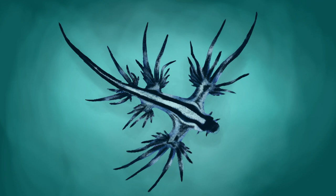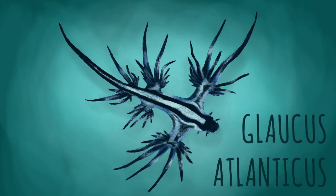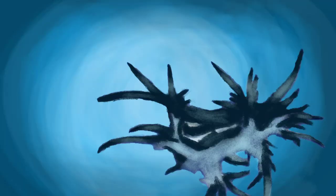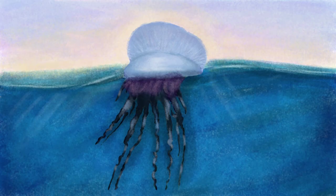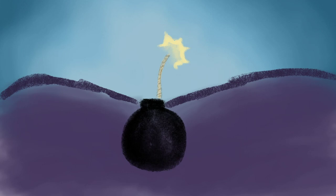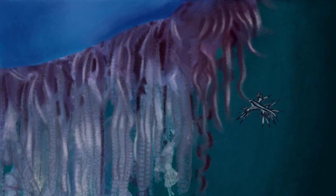While some nudibranchs move along the ground, the nudibranch Glaucus atlanticus fills its body with air, which allows it to float and prey on jellyfish. A jellyfish is usually a painful lunch due to its tentacle stinging capsules. The stinging capsules act like live ammunition because they can go off with even the slightest touch.